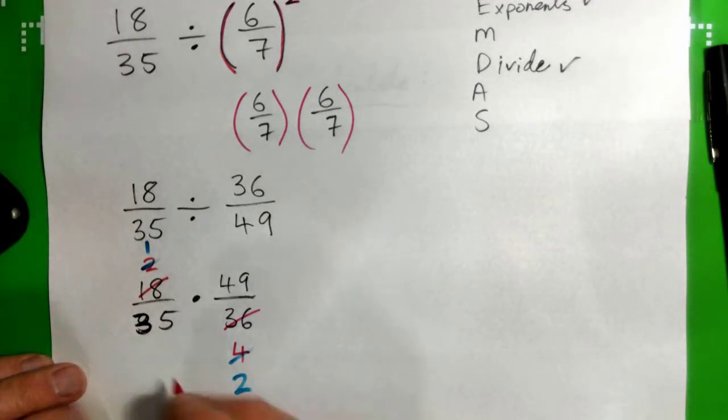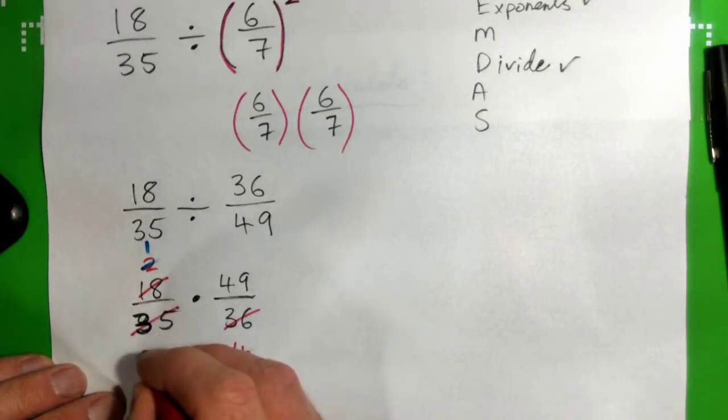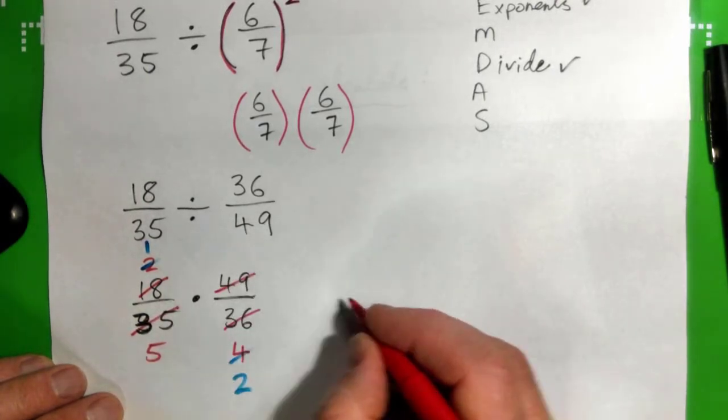Yep. Seven into thirty-five, five times. Seven into forty-nine, seven times. Beautiful.